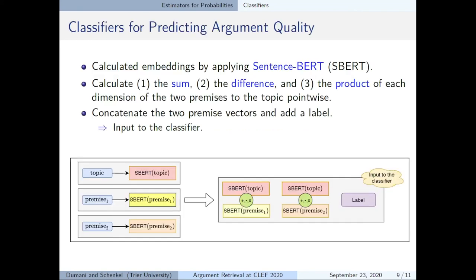And to represent both the premises and the topic we first calculated the embeddings by applying sentence BERT. And now given the three embeddings we then calculate the sum, the difference, and the product of each dimension of the two premises to the topic point-wise before concatenating the two premise vectors, which is the input to the classifier.